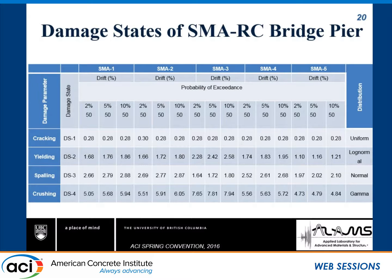For spalling, the progression is cracking, then yielding, then spalling — but for SMA-3, spalling actually occurs earlier than yielding. This is because SMA-3 has a much higher FY value, so spalling takes place sooner than yielding. This follows a normal distribution.